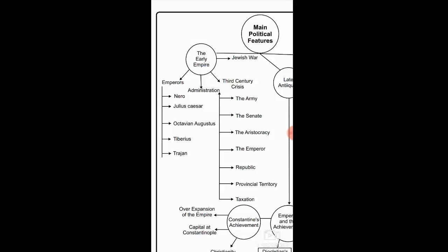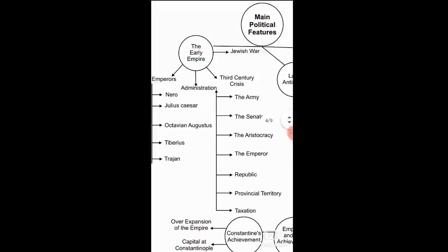The second feature of the early Roman Empire is administration. In administration, the three most important elements are: number one, the emperor; number two, the senate; and number three, the army. These three were the major pillars of Roman administration. The senate involved most of the higher aristocrats, so the major pillars you would consider are the emperor, the senate, and the army.